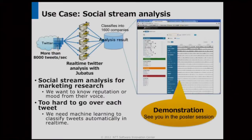Here's one example use case. Imagine someone in charge of marketing strategy who wants to know the reputation of his product from what people are talking about. The best way is to analyze the social stream, such as Twitter. But its stream is more than 8,000 tweets per second — can he read each tweet or classify them as quick as a blink? No. We need machine learning to classify tweets automatically in real-time.